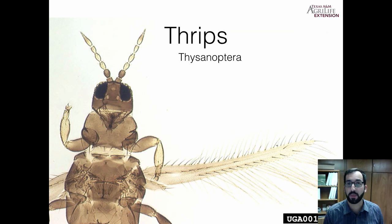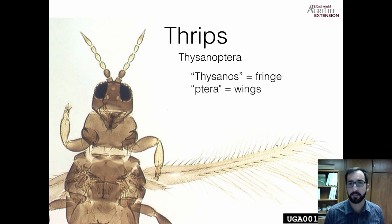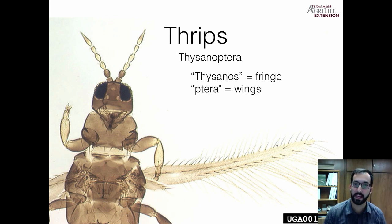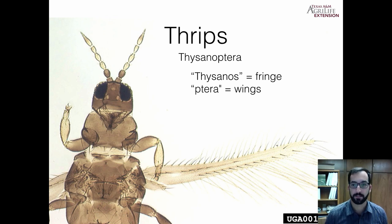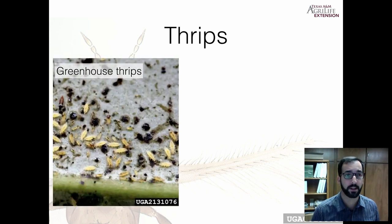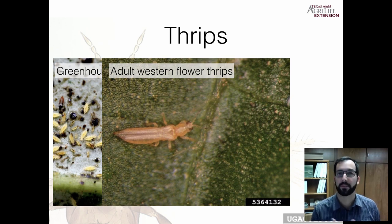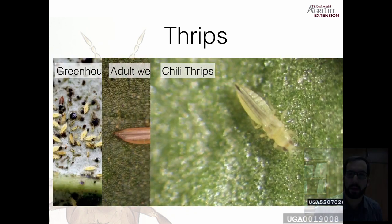We're going to start off with thrips. These insects are in the group known as Thysanoptera, and they have this name because they have fringed wings, which comes from Thysanos and Ptera. If you look at the wings, you'll notice the fringed tips. There are many different species of thrips: greenhouse thrips, adult western flower thrips, and chili thrips.